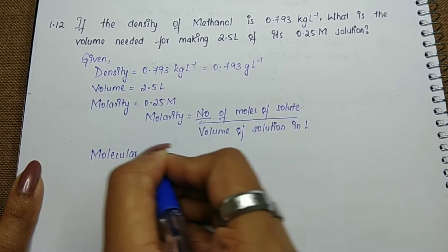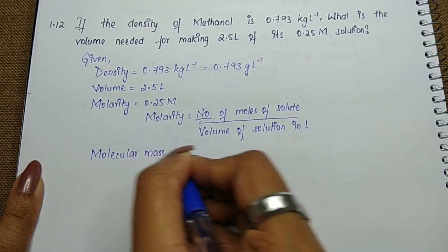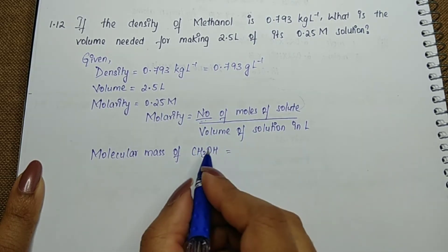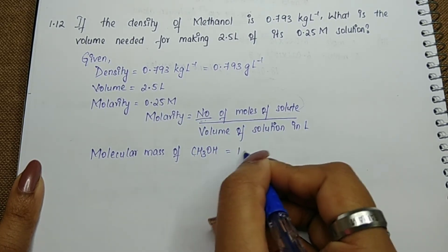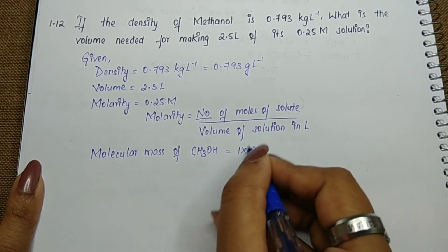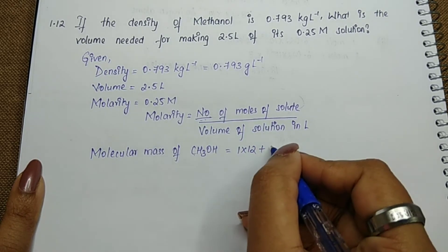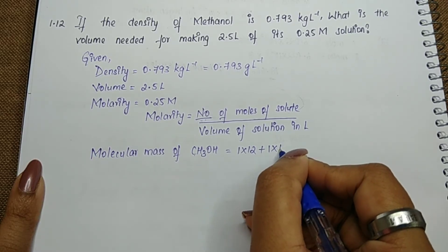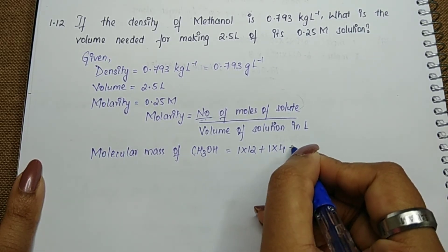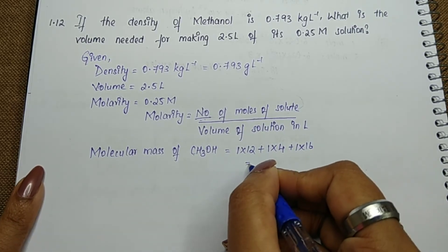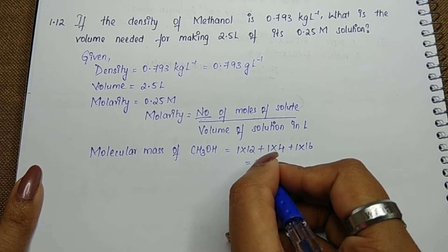Molecular mass of methanol CH3OH: one carbon atom, 1 times 12, plus 4 hydrogen atoms, 1 times 4, plus one oxygen atom, 1 times 16. When we solve this, we get 32 grams.